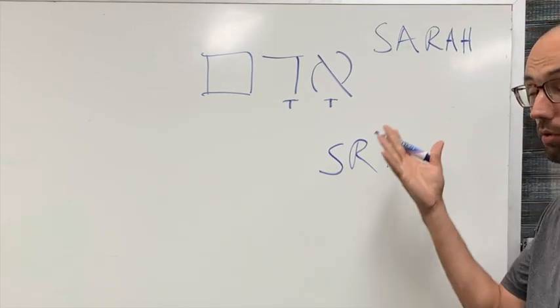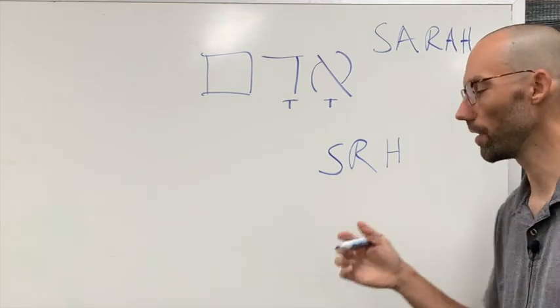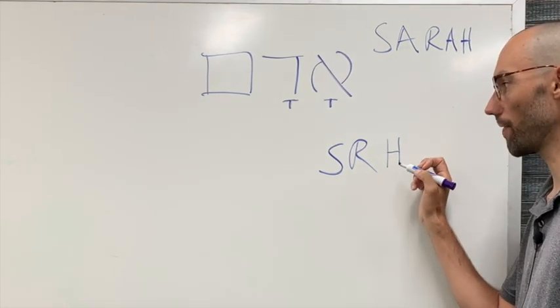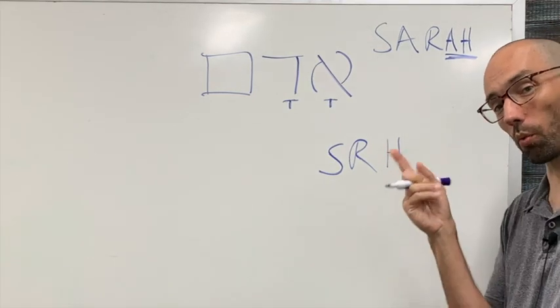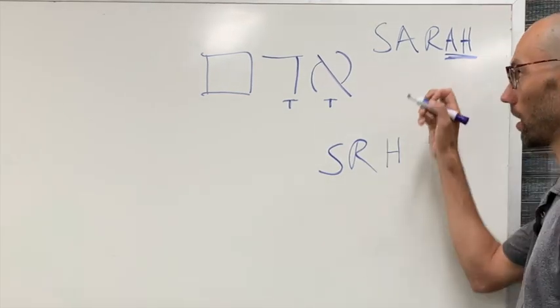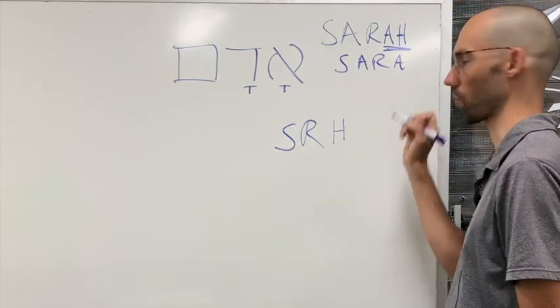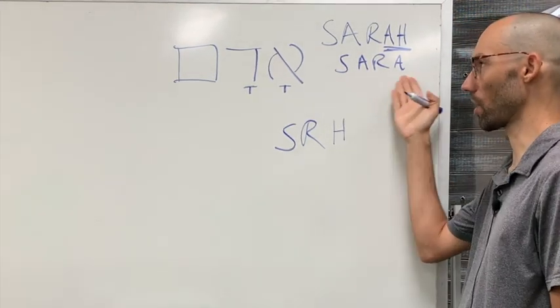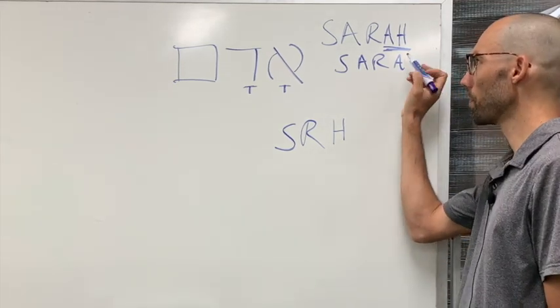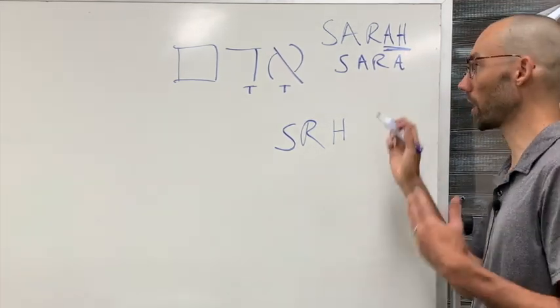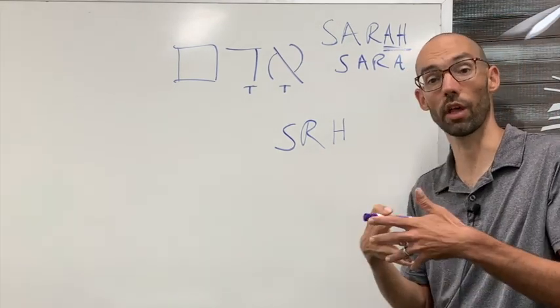The point is, you don't need to know historically why that is, but the point is, occasionally there will be, just like in English, a vowel and consonant will work together to make one sound. And there are some girls I've known who spell their name Sarah with an H or Sarah with no H. But in Hebrew, just like in English, there's sometimes when you have a vowel and a consonant that work together to make one sound.